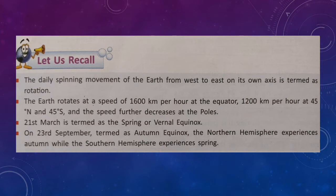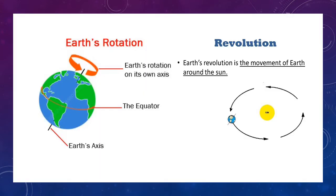We will now examine two drawings — the first is of rotation and the second is of revolution — which you will also draw in your copy. Let us differentiate between rotation and revolution, comparing both motions. Listen carefully and make a table in your rough notebook.